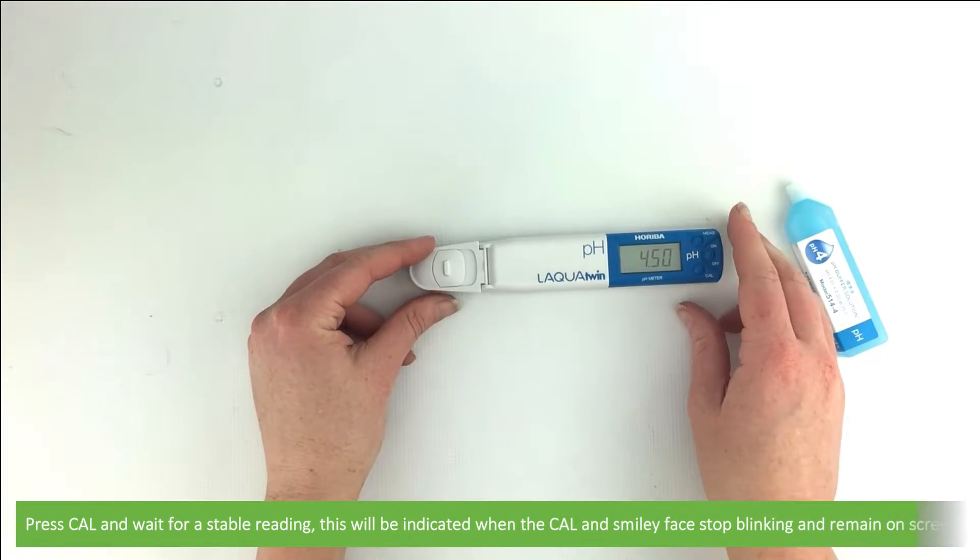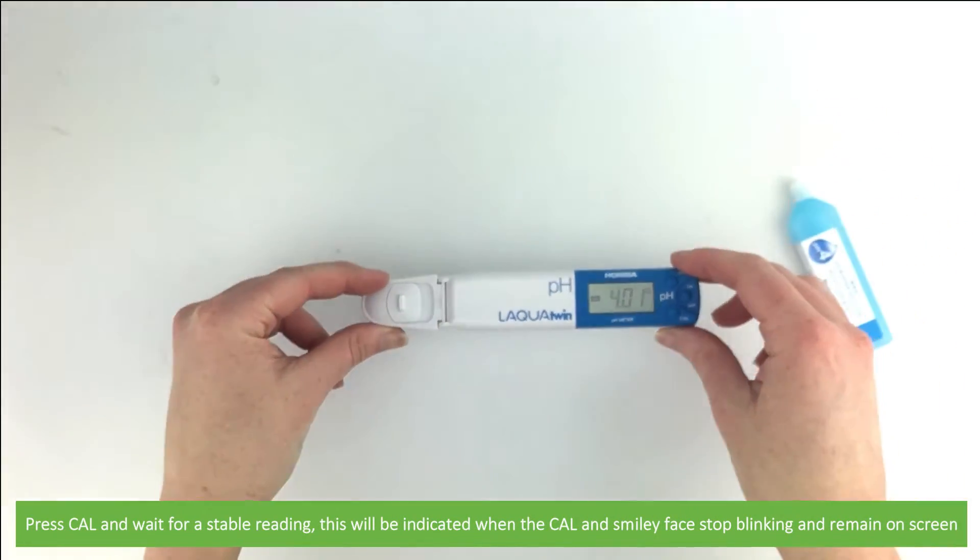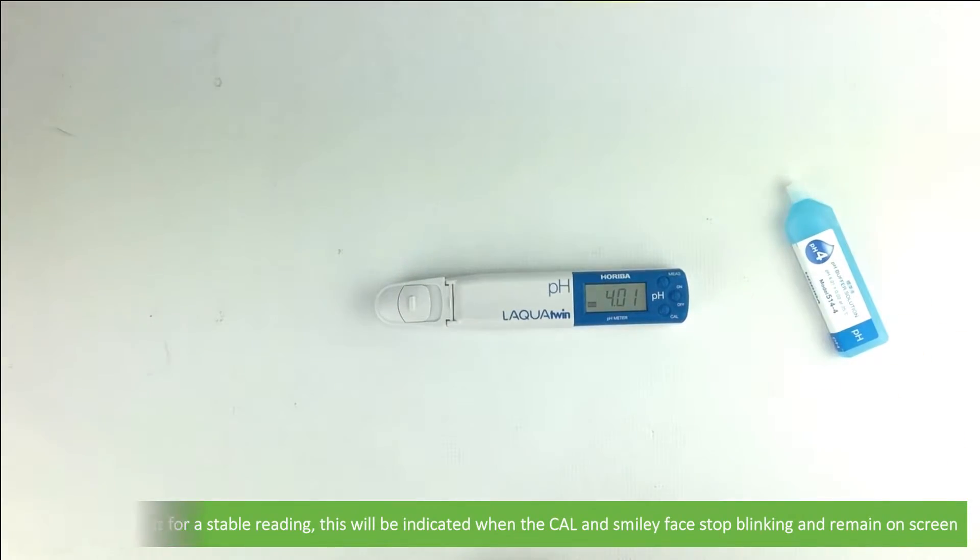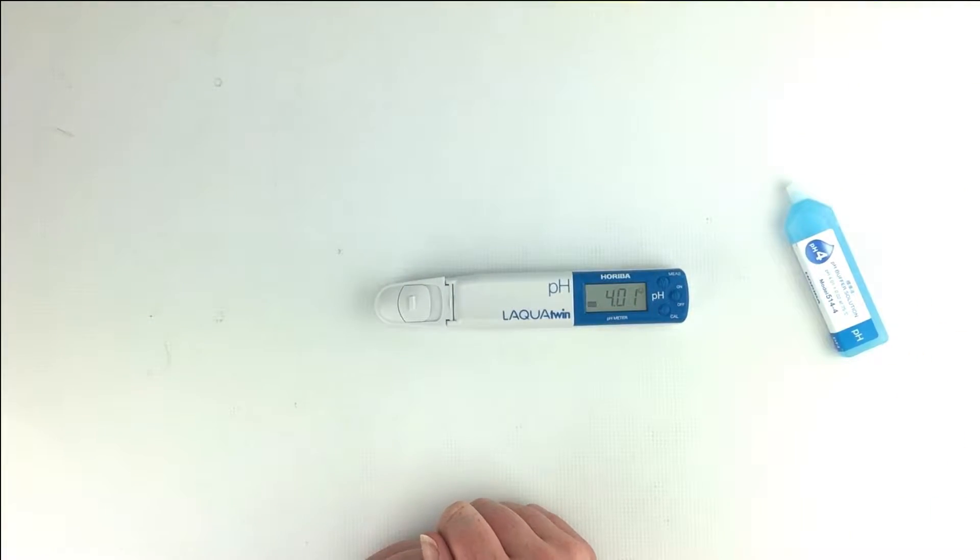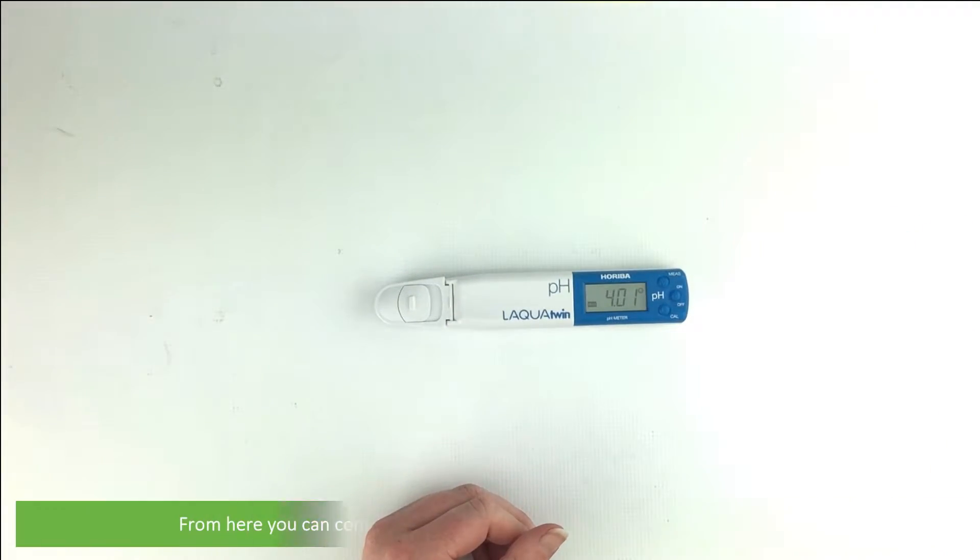Press Cal and wait for a stable reading. A stable reading is indicated when the Cal and smiley face stop blinking and remain on the screen. Then the device will return to measurement mode.